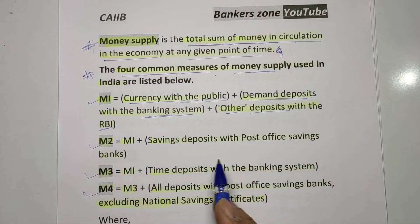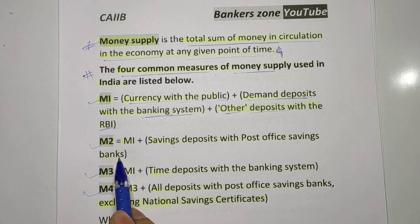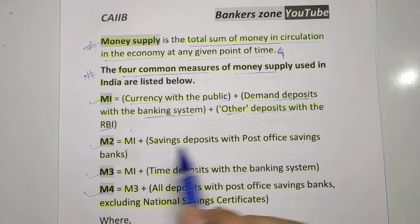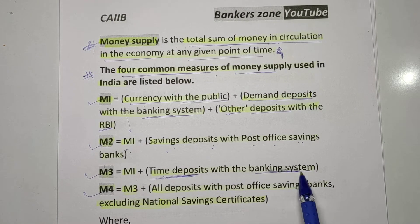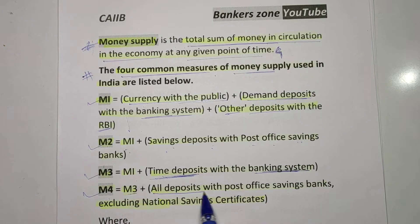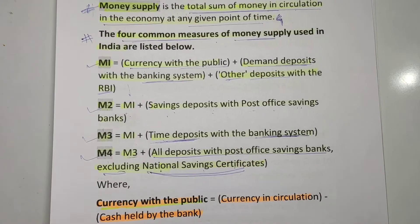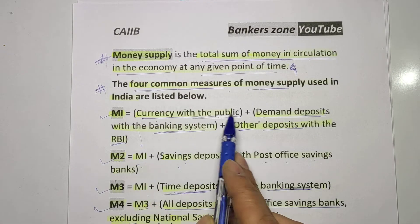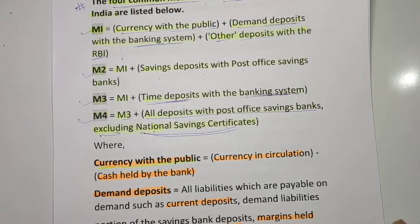M2 is M1 plus savings deposits with the post office savings banks. M3 is M1 plus time deposits with the banking system. M4 is M3 plus all deposits with the post office savings banks, excluding NSC — that is the National Savings Certificate.